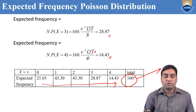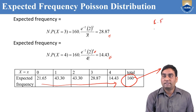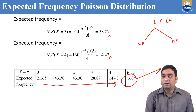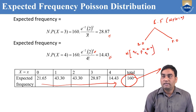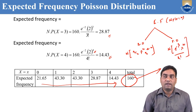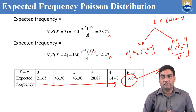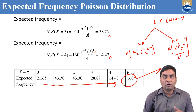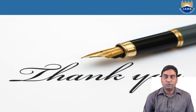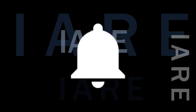This is the process of finding expected frequency for both binomial and Poisson distributions. The formula is N · P(x = x) in both cases. For binomial, P(x = x) = nCx · p^x · q^(n−x). For Poisson, P(x = x) = e^(−λ) · λ^x / x!. Thank you. Like, share, and subscribe, and hit the bell icon for more updates.